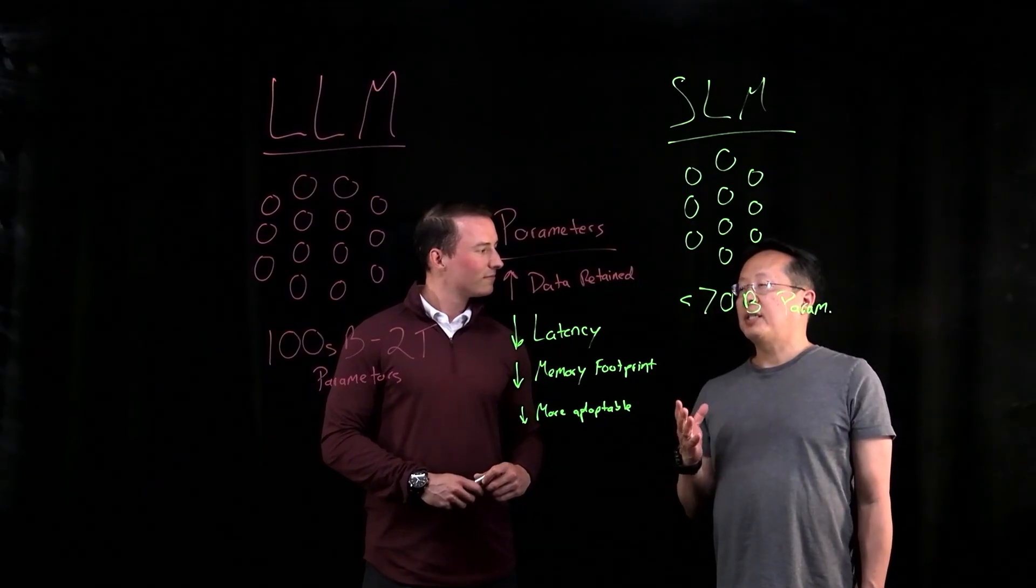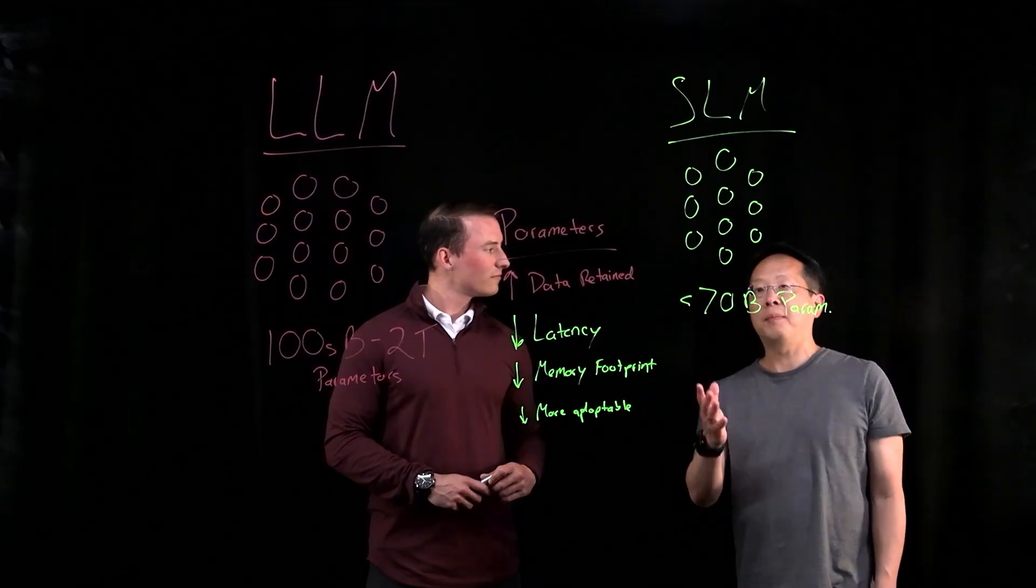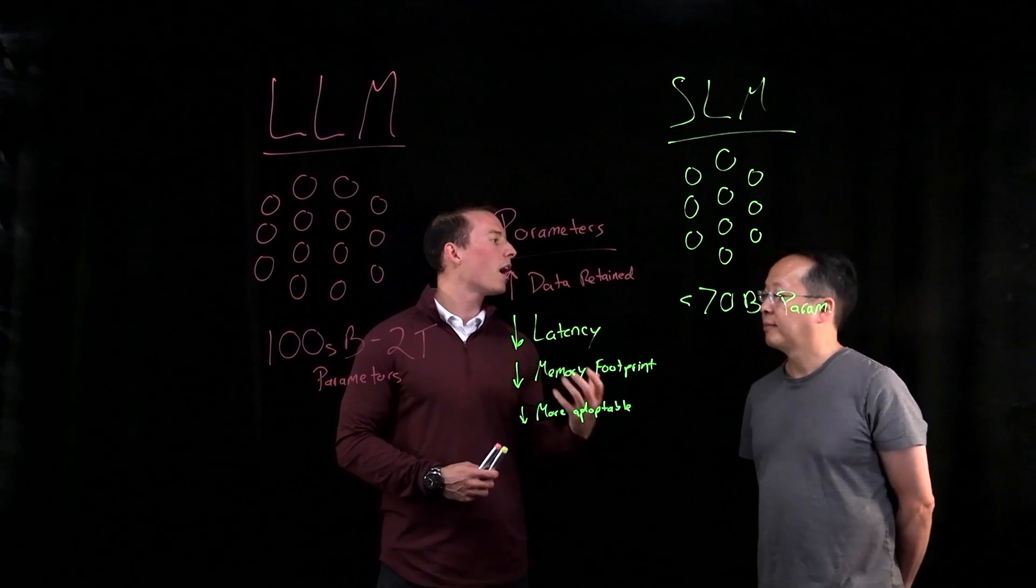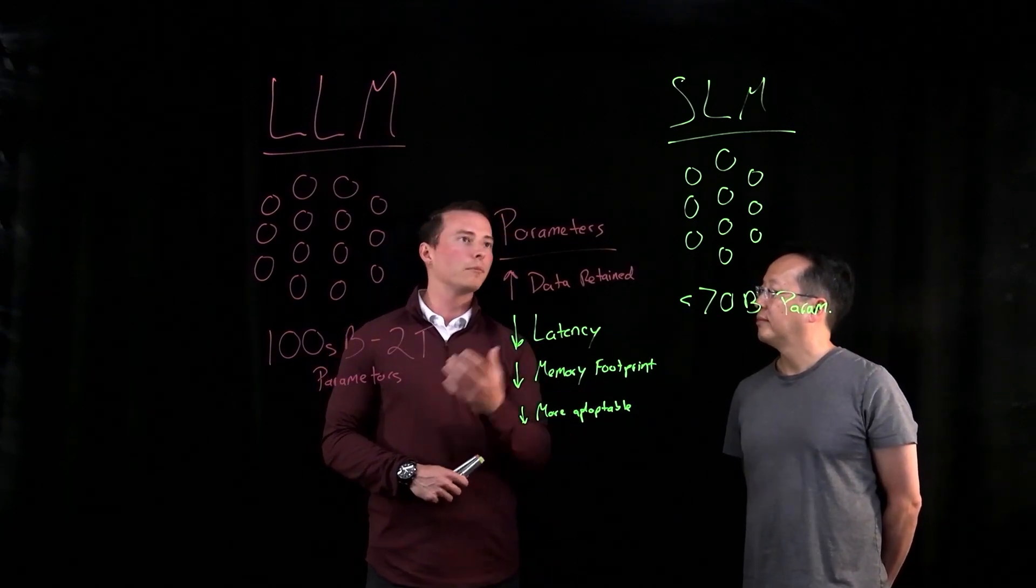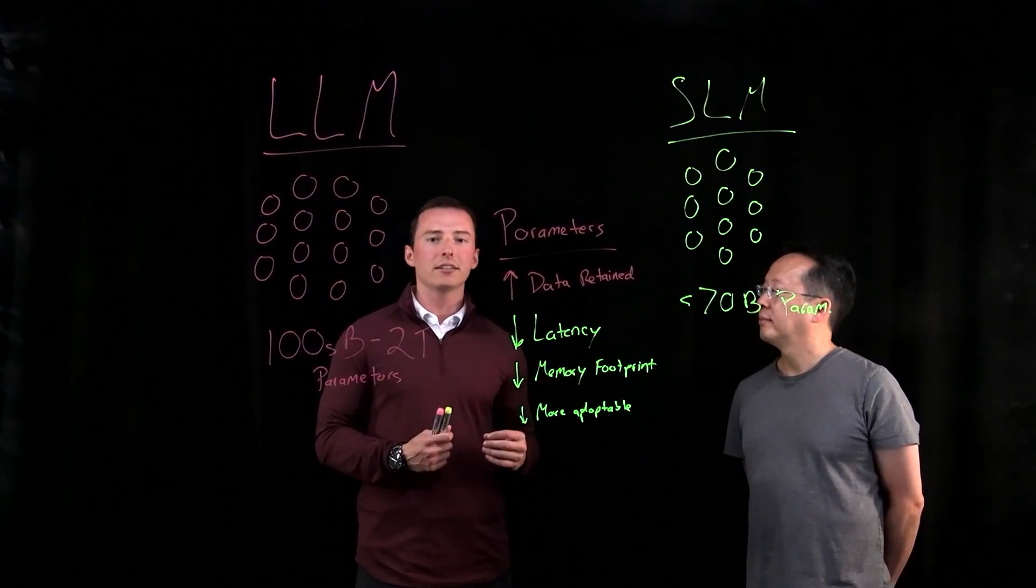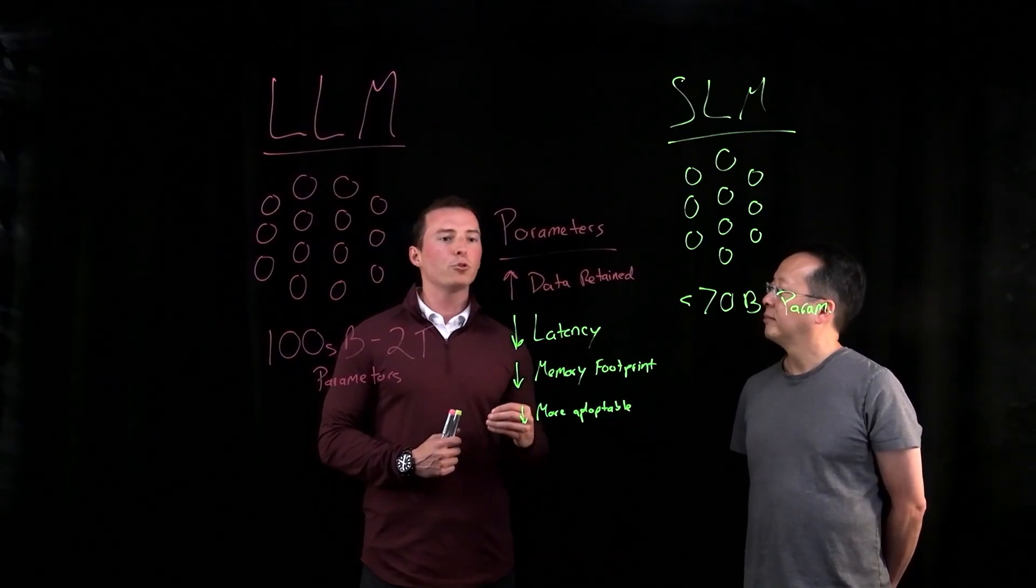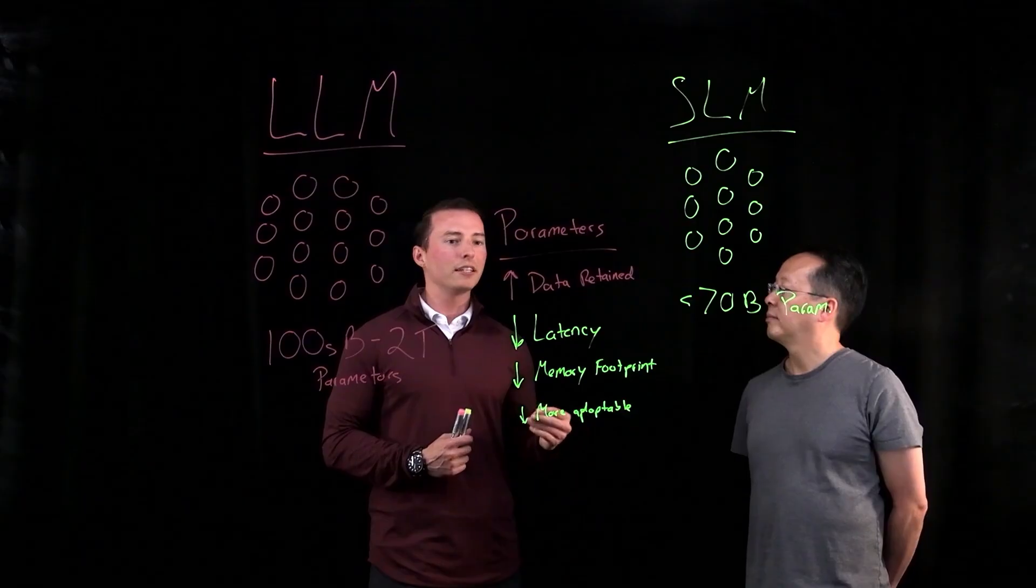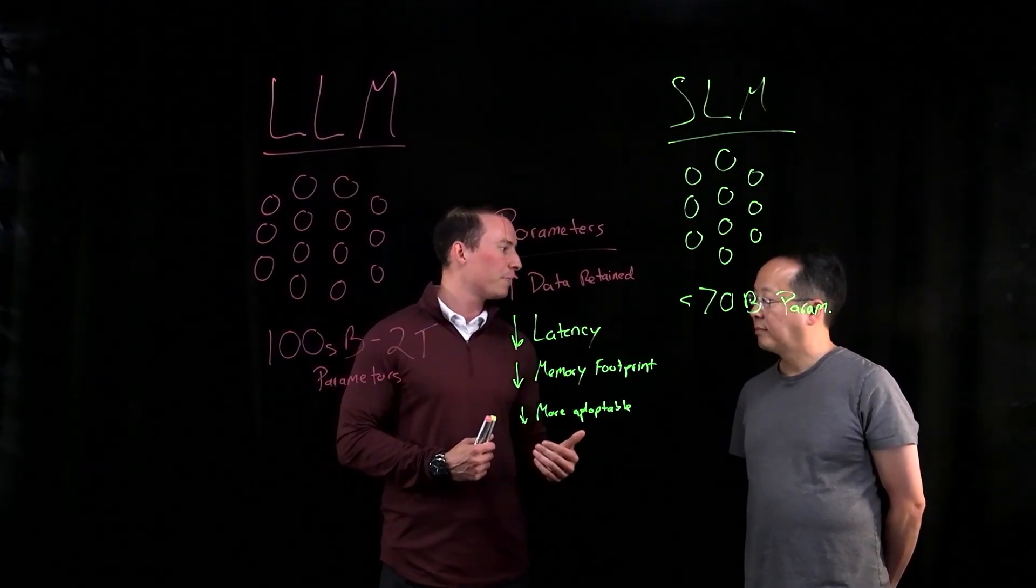But I'm curious, in addition to simply having fewer parameters, are there any special techniques SLMs use so that they can run more efficiently? Yeah, absolutely. One really popular way to improve the efficiency of both LLMs and SLMs is a technique called quantization. At a high level, what quantization is, is it is the trade-off of running a model at a lower precision in order to improve the latency, reduce memory footprint, and the impact on that is typically a slight degradation to accuracy.